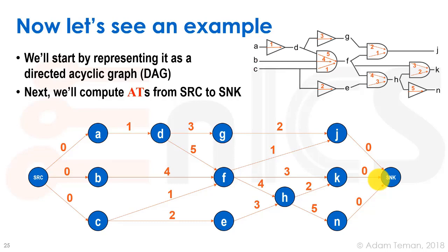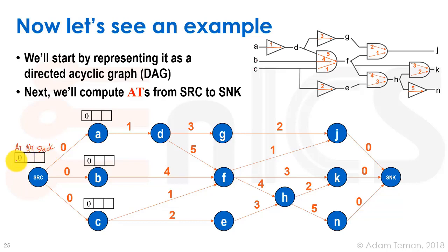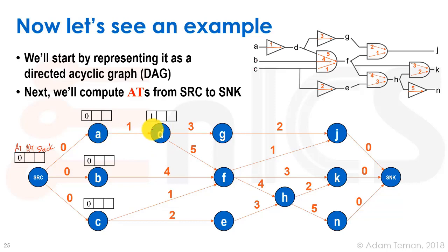Now we compute all the ATs from source to sink. The AT at the source is zero. Since there's only one edge to each of A, B, and C, their ATs are also zero. For D, it's a single-input gate, so we take the AT of its predecessor (zero) plus the edge delay of 1, giving an arrival time of 1. For G, we take the AT at D (which is 1) and add 3, getting an AT of 4. For E, we take AT of zero plus 2, getting an AT of 2.